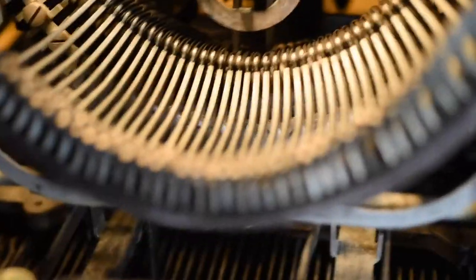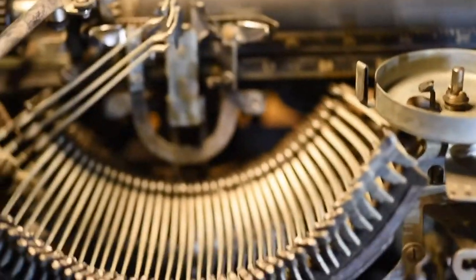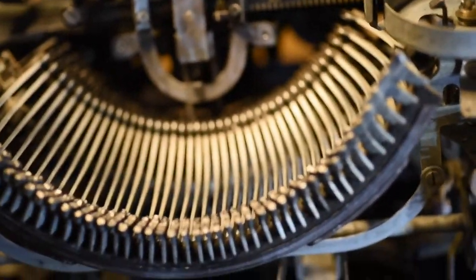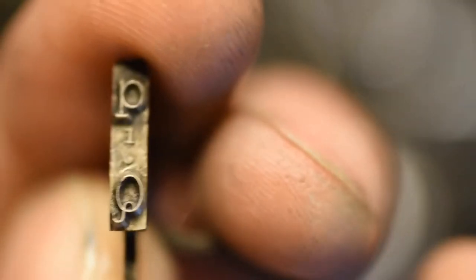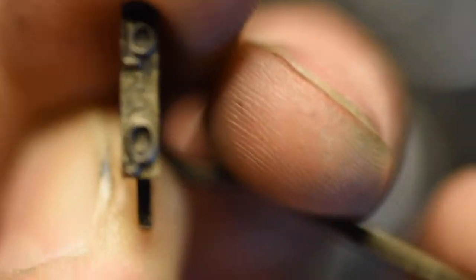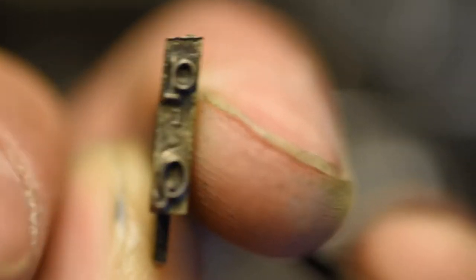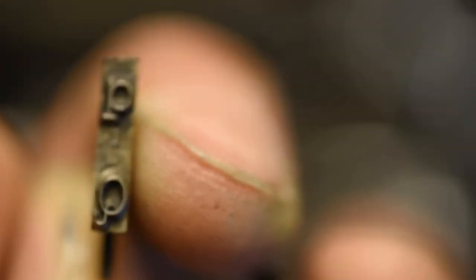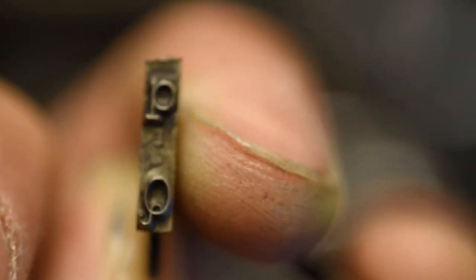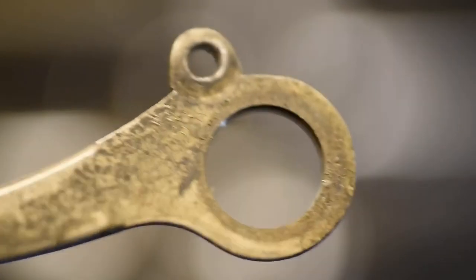But the type slugs are not. If you notice this machine, it shifts down, whereas the older ones shifted up. If we zoom in on these type slugs, the capital letter is on the top of the slug, whereas on the older models from the 1910s and prior, the capital letter is on the bottom of the type slug. When you replace the bearing with a new key lever, make sure you either re-solder the slug or salvage the original key lever.